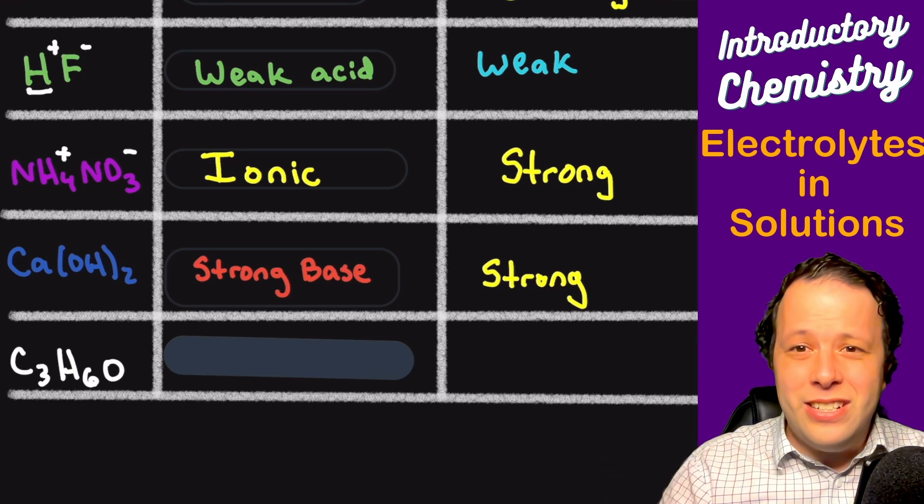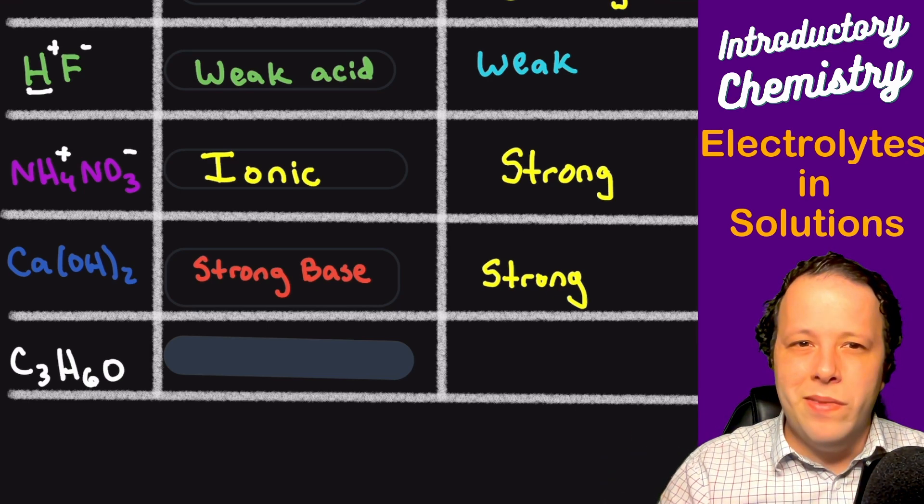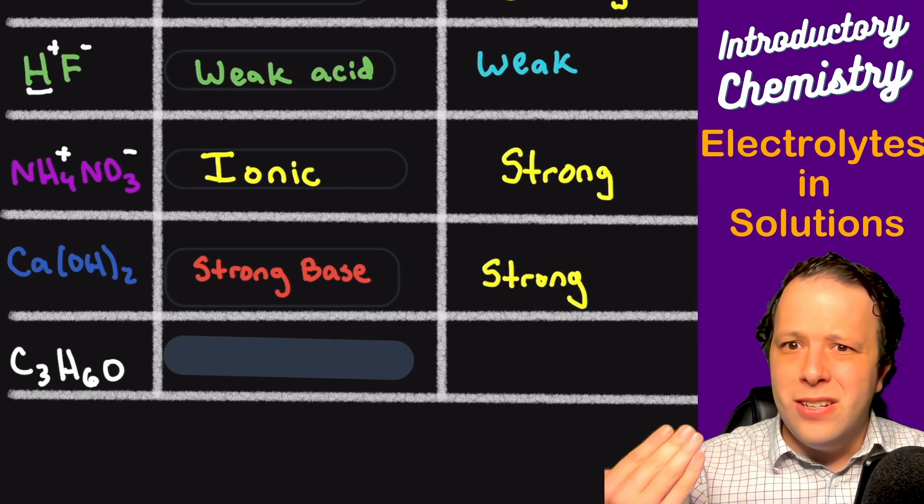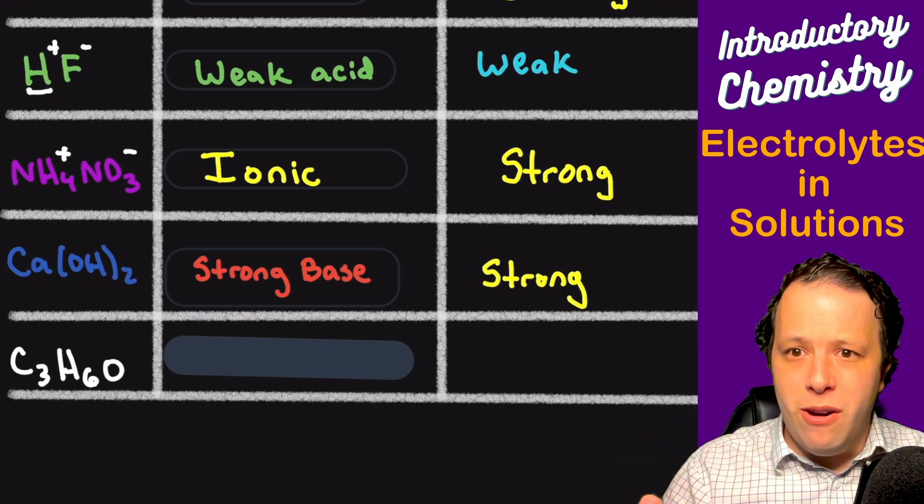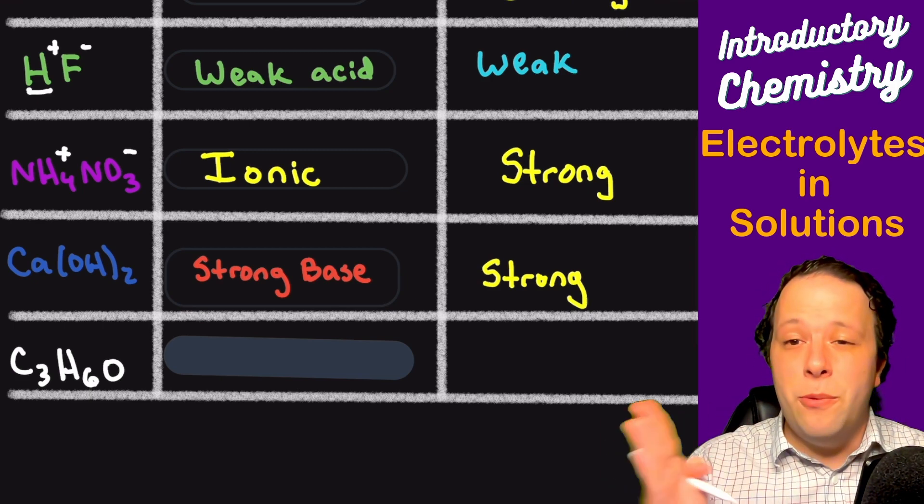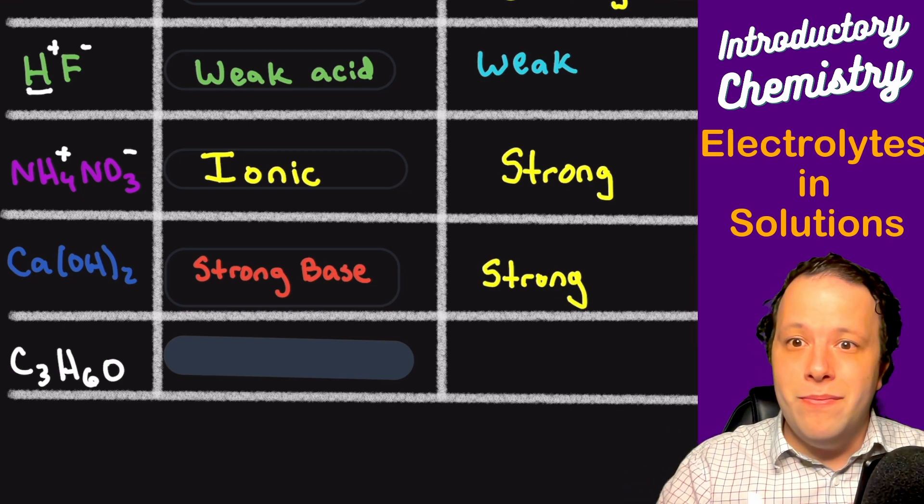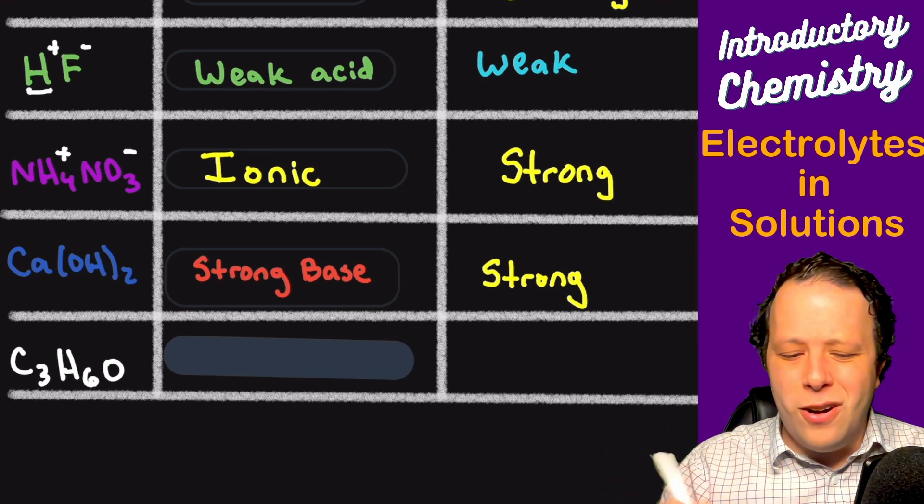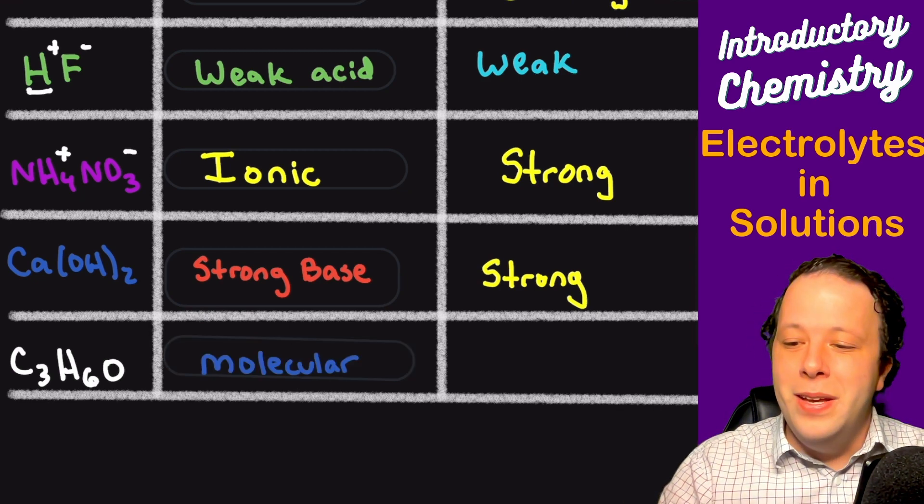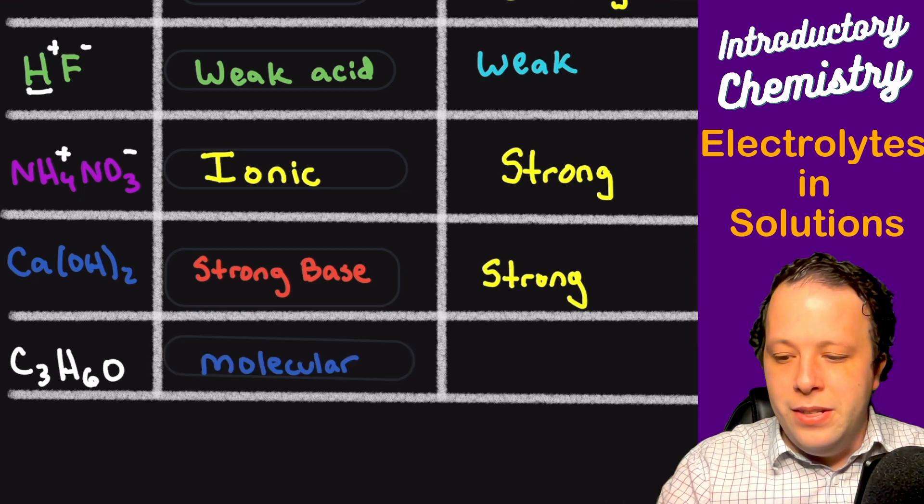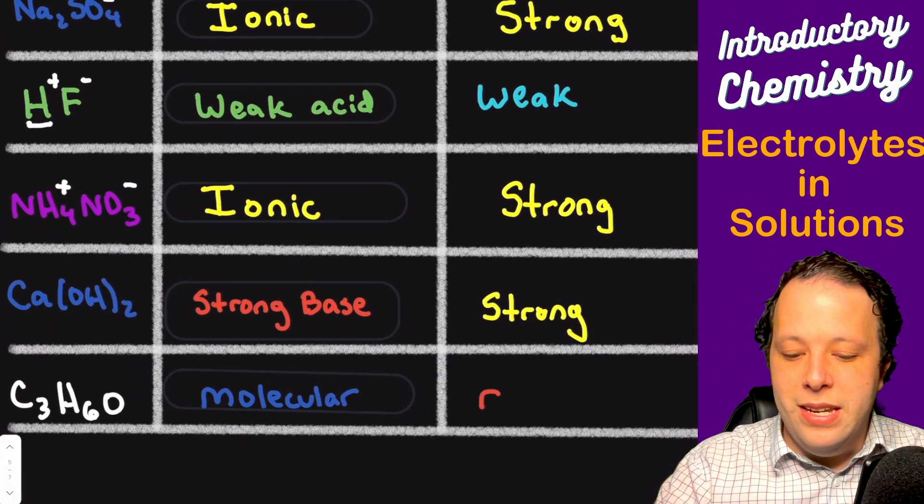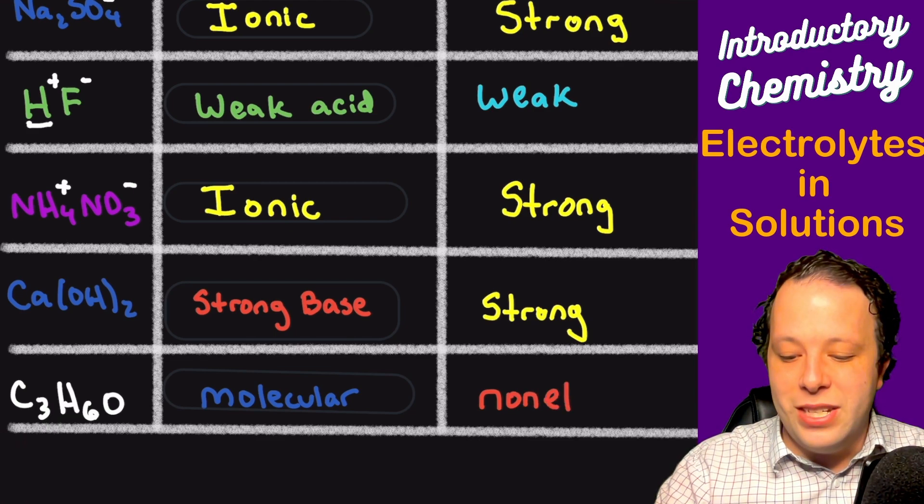Now C3H6O. Hmm, this one's non-ionic, right? It's all non-metals bound together. So and there's no hydrogen out front and no OH in the back. There are hydrogens and oxygens in it, but it's not where they're supposed to be. So they must be covalent then, right? If we ever see a carbon molecule, it must be covalent. It's probably an organic molecule, meaning it's molecular. So if something is molecular, how should we label that? That's going to be a non-electrolyte as a result.